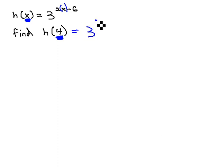We get 3 to the 2x, or 2 times 4, minus 6 power, and we simply have to evaluate this expression. Working out the exponent, 2 times 4 is 8, so we have 3 to the 8 minus 6 power, and 8 minus 6 is 2. We now have 3 squared, which is equal to 9.